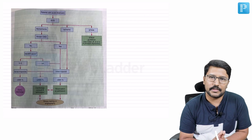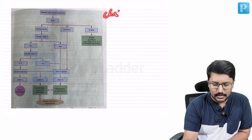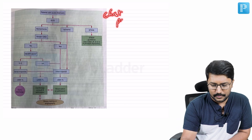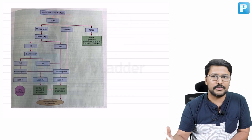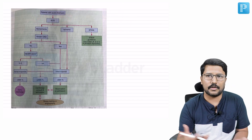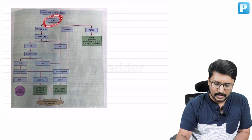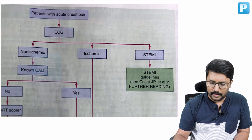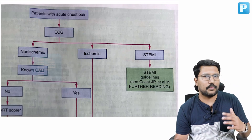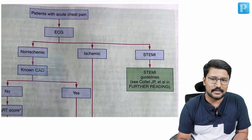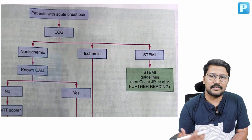Let us look at one particular flowchart covered in the 21st edition of Harrison's, which talks about the approach to chest pain. The first investigation to do in the emergency room when anyone comes with chest pain — which is what we routinely do — is an ECG. If the ECG is suggestive of STEMI, the diagnosis is established and we know what to do next.